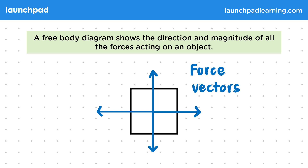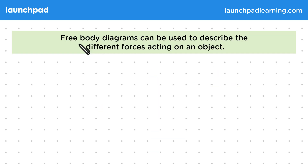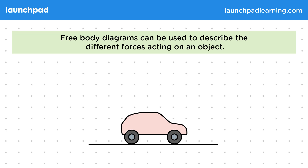So what are some common forces we might see in a free body diagram? Well, free body diagrams can be used to describe the different forces acting on an object. A good example is a car, which has many common forces acting on it.